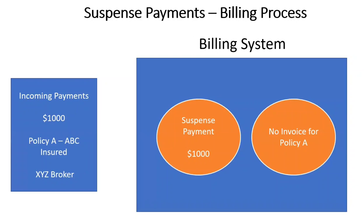It's not just the case where the billing system hasn't received policy information from the policy administration system. Sometimes the incoming payment may say apply to policy number ABC, whereas the actual policy number could have been ABD — a clerical mistake. In those scenarios, it will initially be in suspense, and then a billing clerk has to validate and see why the discrepancy happened. Once they identify that the incoming payment had policy number ABC whereas the actual policy number should have been ABD, they correct that policy number and apply the suspense payment accordingly.